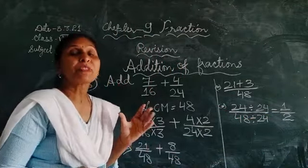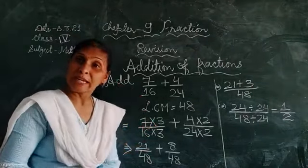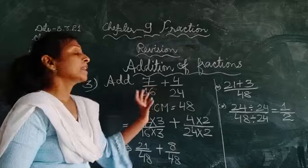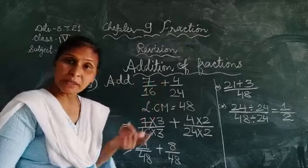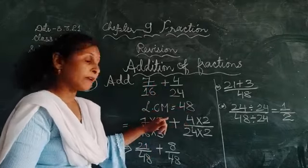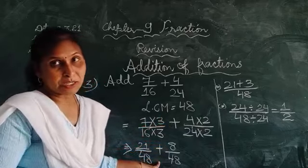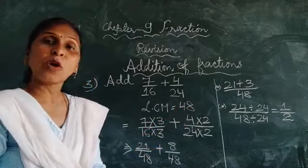To jab bhi hamare ko unlike fraction given hota hai, to sabse pehle use like banana hota hai. To like ke liye hum ya to cross multiply karke bhi isko solve karsakte, ya LCM find out karsakte. Iska LCM find out karliya aur is tarah se like fraction mein convert karke, phir humne isko add kar diya.